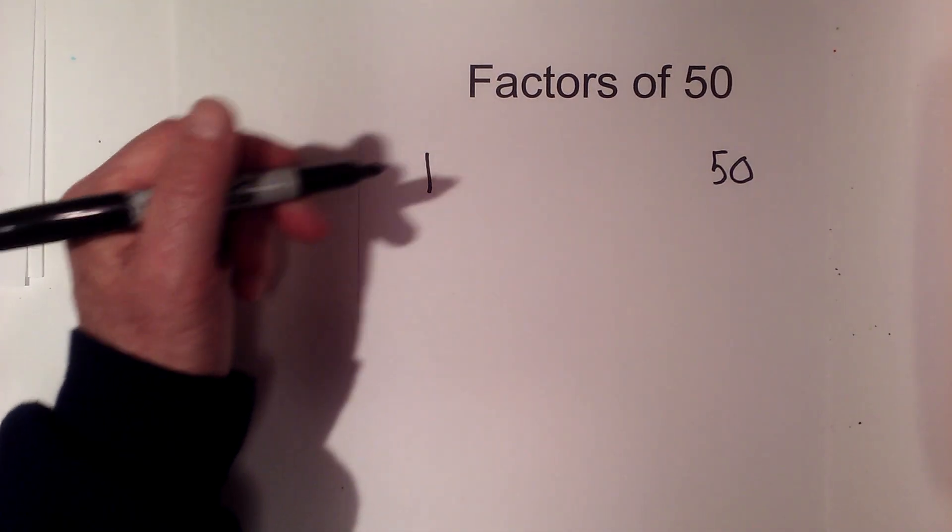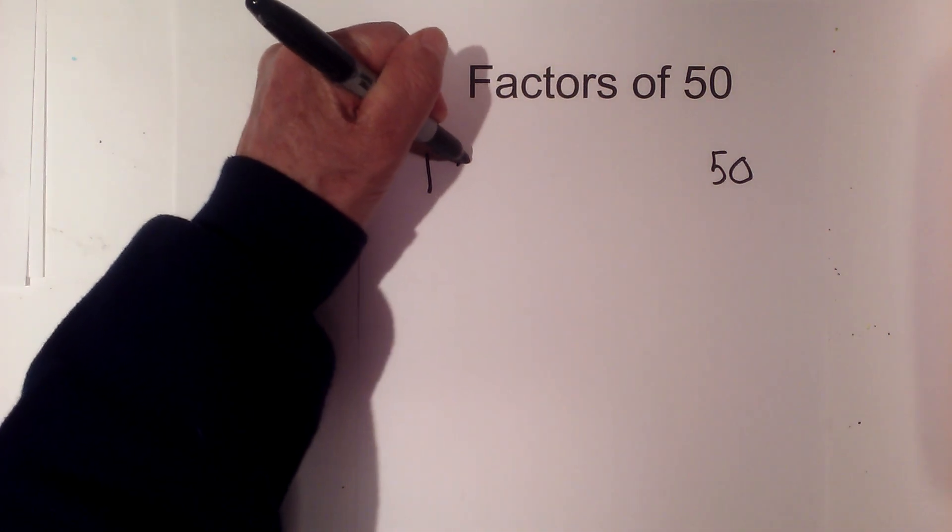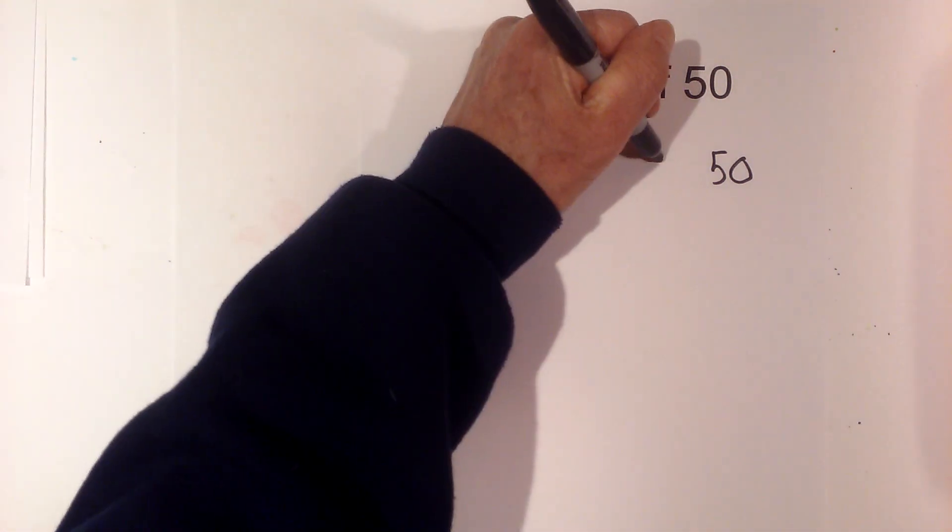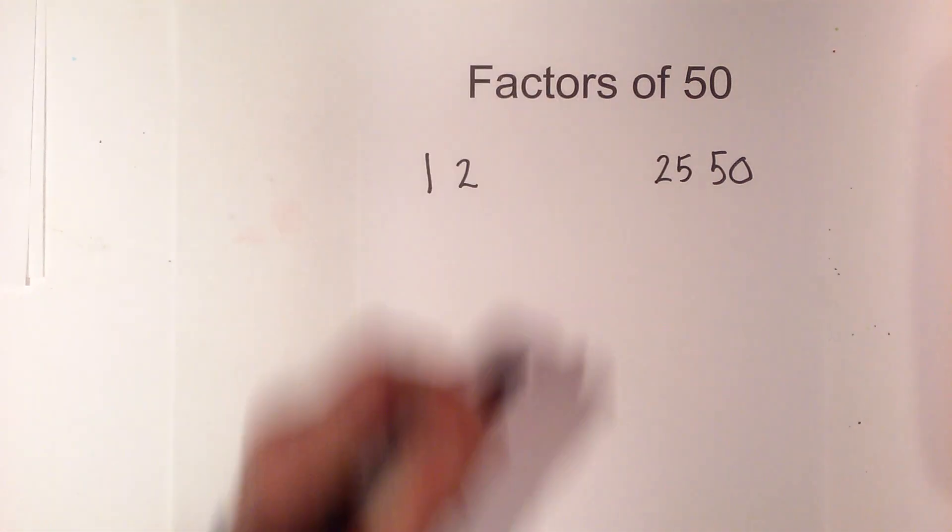So let's start with 2. Does 2 go into 50? Yes, because any number that ends in zero or is even is divisible by 2, and 2 times 25 is 50.